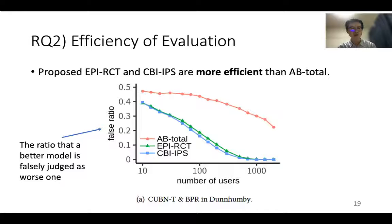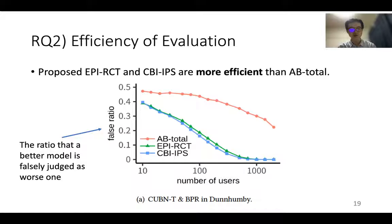Next, we verify the efficiency of evaluation. The figure shows the dependence of the false ratio on the number of experimented users. The false ratio is the ratio that a better model is falsely judged as the worst one. The false ratio decreases with the number of users. A-B total requires about 30 times more users to achieve the same false ratio as EPI-RCT and CBI-IPS. Thus, we can conclude that the proposed methods are more efficient than A-B total.